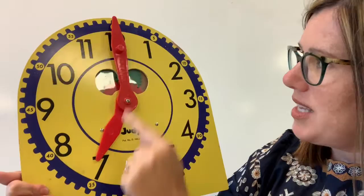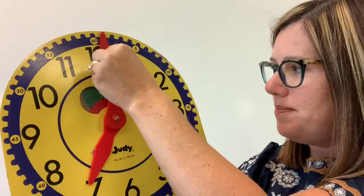So if I was going to read this clock, I would say the hour is on the seven, the minute is here. So it is seven o'clock. Let's try a few more.